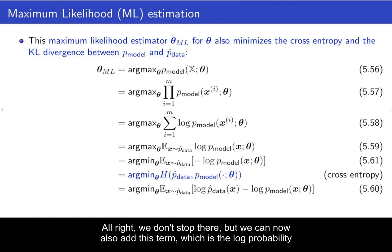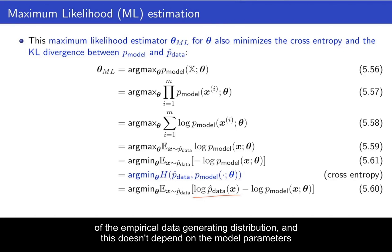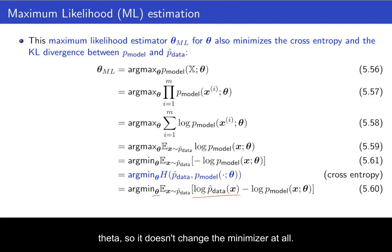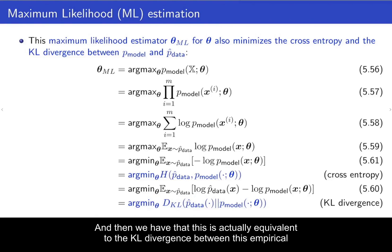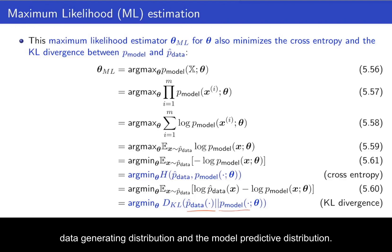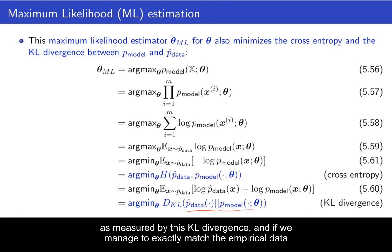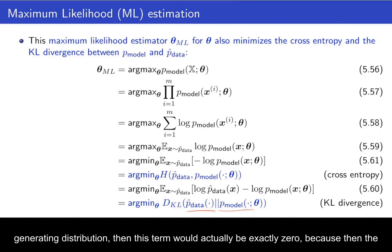Alright, we don't stop there. But we can now also add this term, which is the log probability of the empirical data generating distribution. And this doesn't depend on the model parameters theta. So it doesn't change the minimizer at all. And then we have that this is actually equivalent to the KL divergence between this empirical data generating distribution and the model predictive distribution. So recall that we're trying to minimize this distance between these different distributions as measured by this KL divergence. And if we manage to exactly match the empirical data generating distribution, then this term would actually be exactly zero. Because then the cross entropy would equal the entropy. And while the KL divergence is just defined to be the cross entropy minus the entropy, so if those two match, then it would be zero.